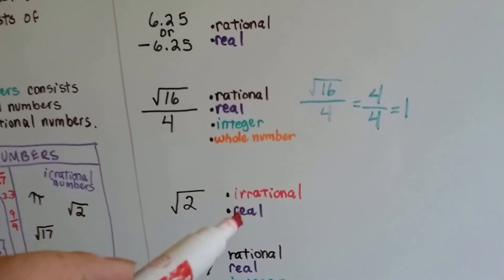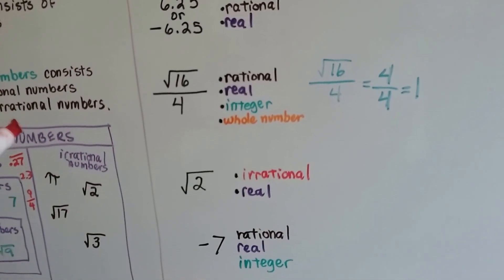Square root of 2. Square root of 2 is irrational and real. See? It's irrational and real.